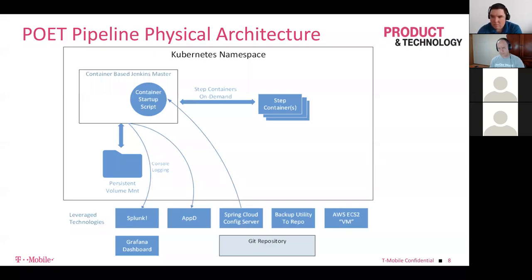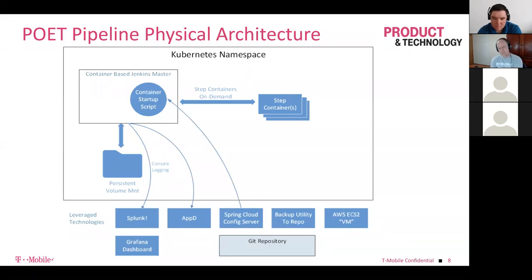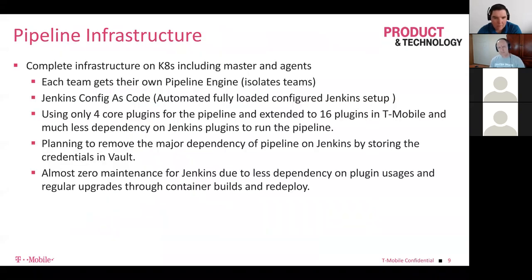For agents — which are the workers for Jenkins — they can be spun up either in the same Kubernetes space or on another Kubernetes cluster. We use dynamic provisioning of agents. Similarly, we can do this on AWS — in our case we use both. We also have a Grafana dashboard, so all the metrics from every step executed in a pipeline get collected and displayed there.